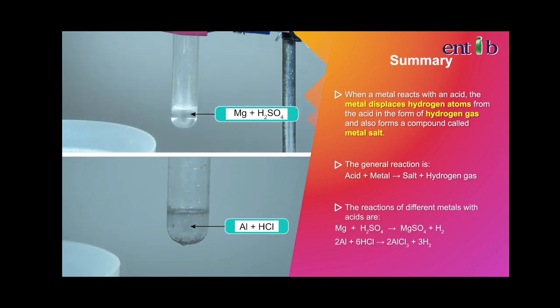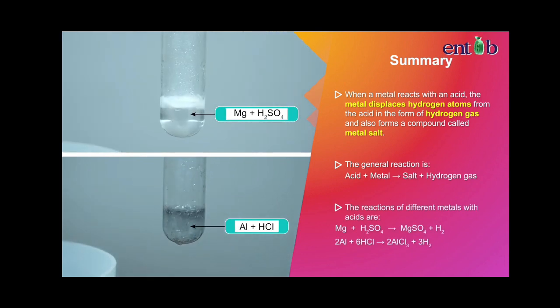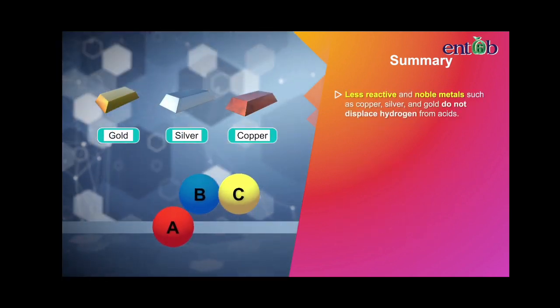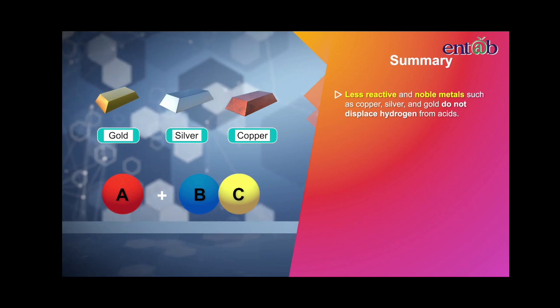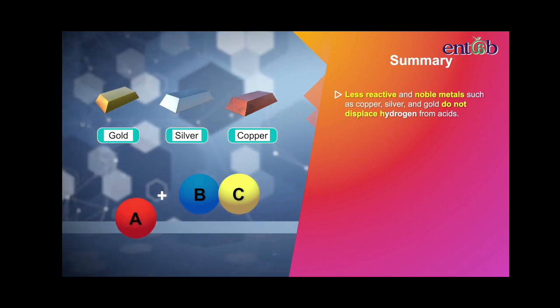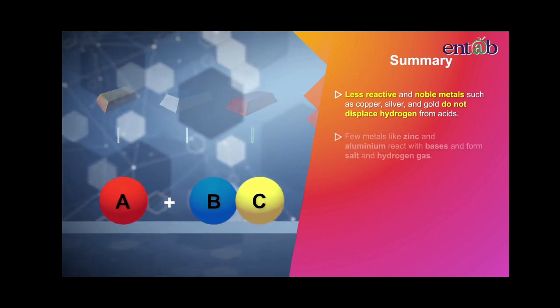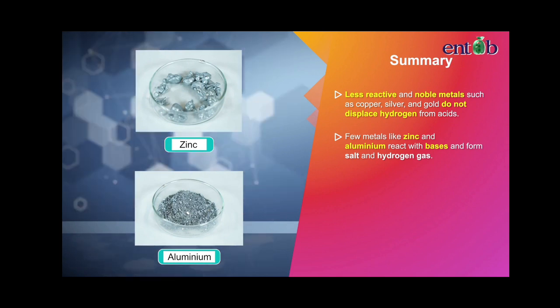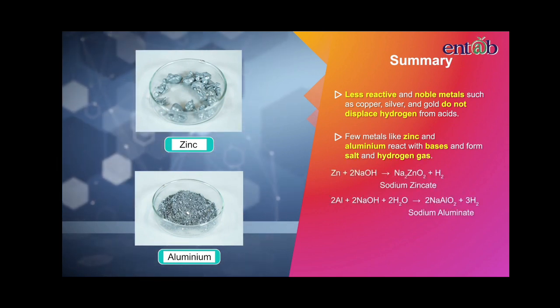A few reactions of different metals with acids are shown. Less reactive and noble metals such as copper, silver, and gold do not displace hydrogen from acids. Only a few metals like zinc and aluminum react with bases and form salt and hydrogen gas. Most of the metals do not react with bases.